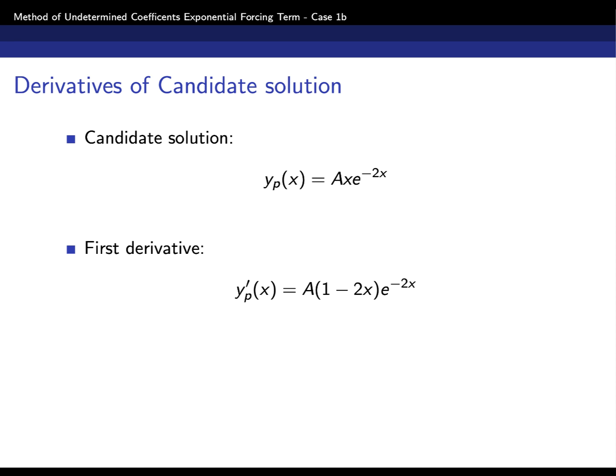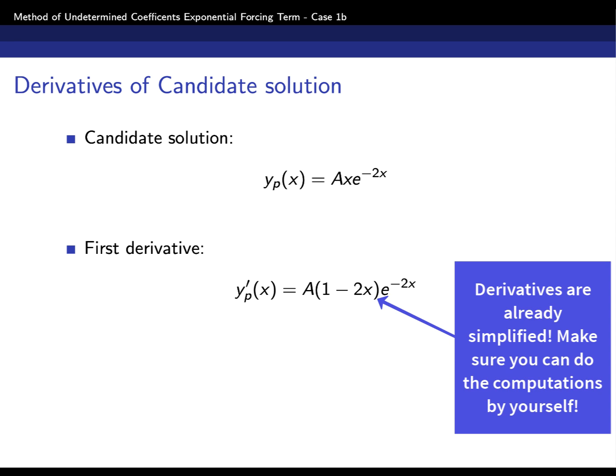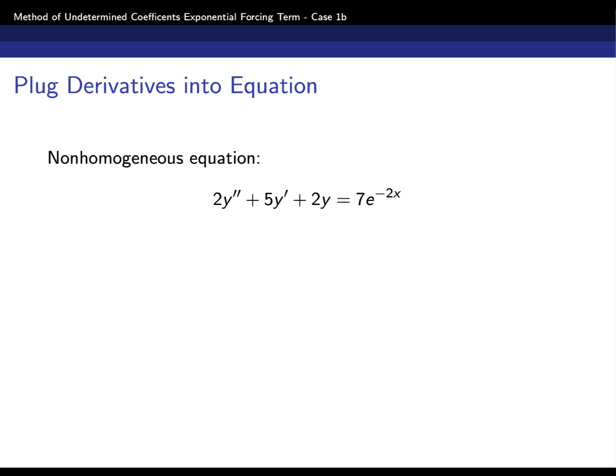Once you have the candidate solution, everything proceeds in the usual way. You compute the derivatives — note that you must use the product rule for the first derivative. An important practical point is to simplify the derivatives as much as possible, factoring out the exponential term e^(-2x). After analogous simplification, you also obtain the second derivative. Now we have the function, the first derivative, and the second derivative, so we are ready to plug into the differential equation.